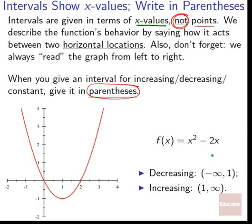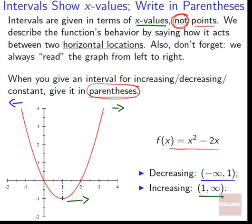Quick example: for f(x) = x² - 2x, the graph decreases until it bottoms out at horizontal location one. It's decreasing all the way from negative infinity until it bottoms out at one, then increasing after that forever. So: decreasing on (-∞, 1), increasing on (1, ∞). We don't include the one because it's a switchover point — at that very instant it's technically flat, but we can't discuss that until calculus.